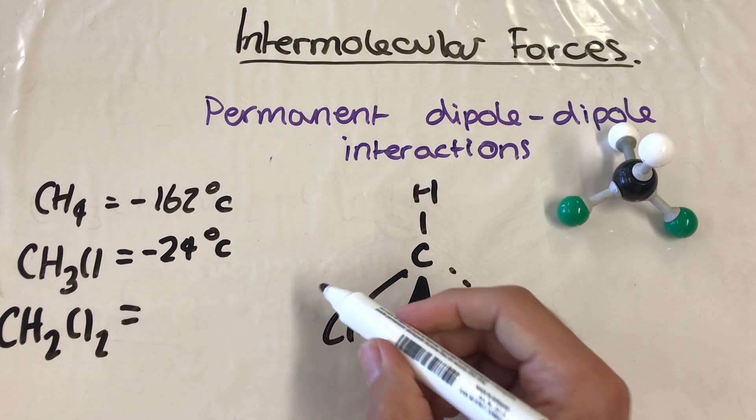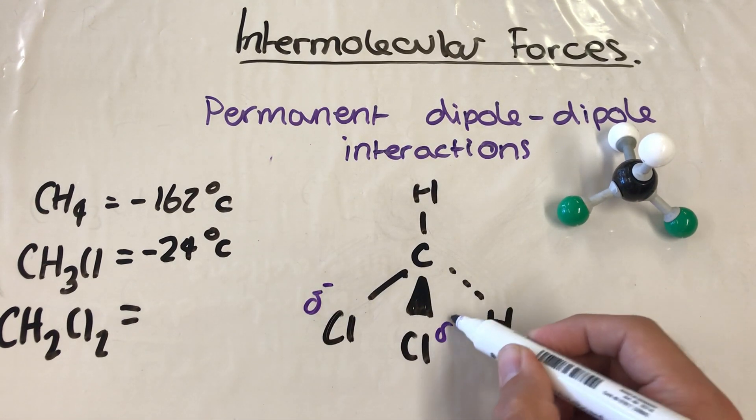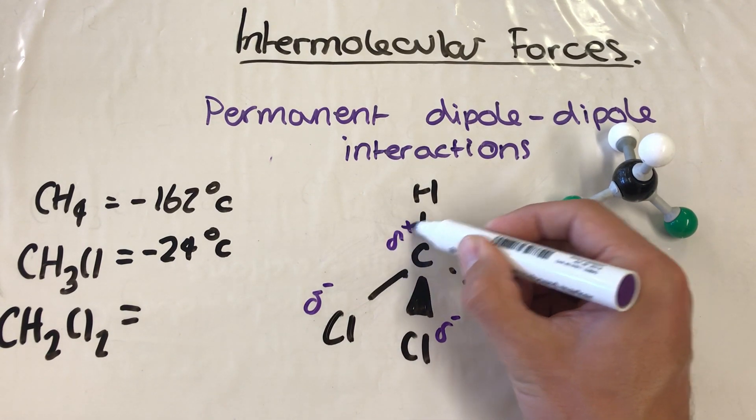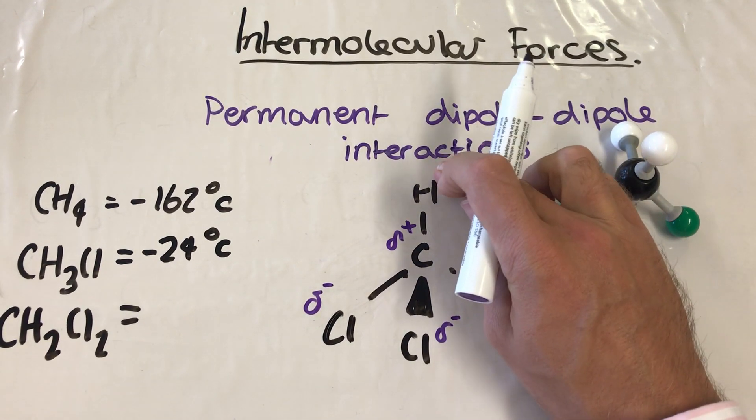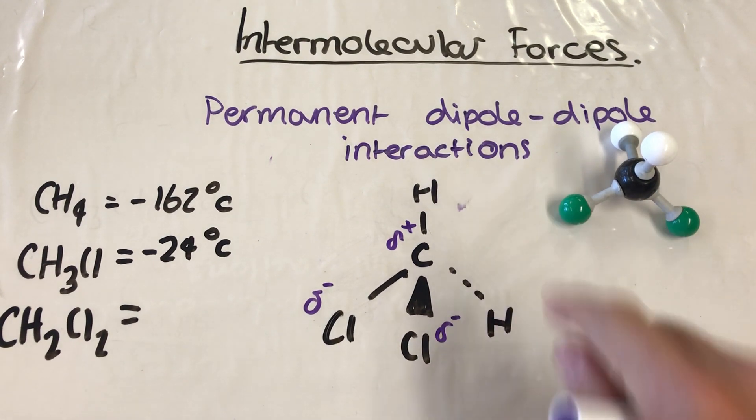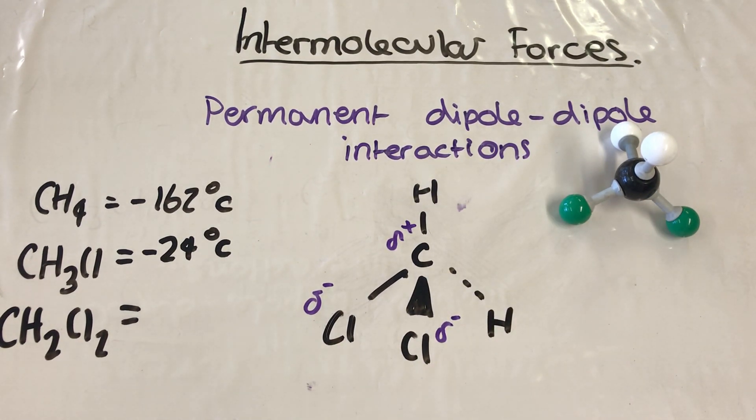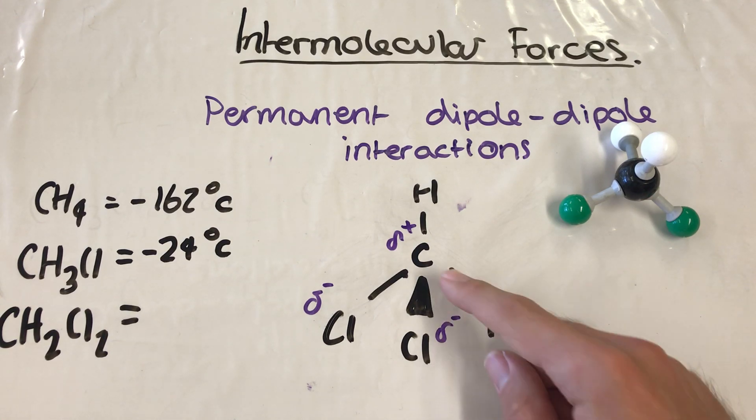We now have two chlorines, which are more electronegative than their carbon. And then we have two polar bonds here. So these two chlorines are more electronegative and therefore drawing the electrons in the bond towards themselves more than the carbon is.